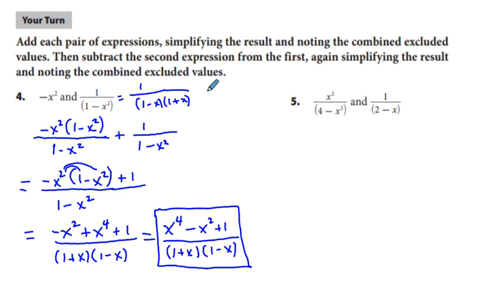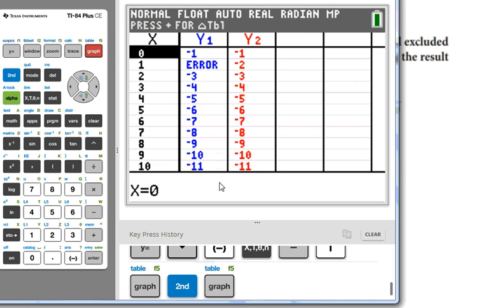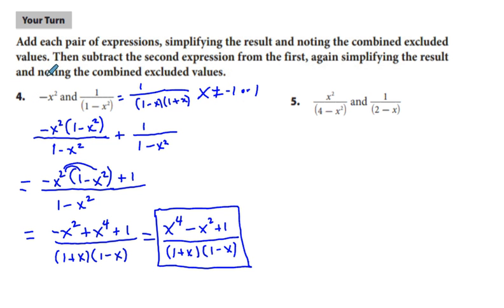We notice that x cannot equal negative 1 or 1, because we can't divide by zero. For subtraction, it's going to be the very same process, except we'll get minus 1 over here. That's as far as we'll go in this introductory lesson. We'll have an exercise set to go over and further reinforce your developing understanding. Good luck and thanks for viewing.